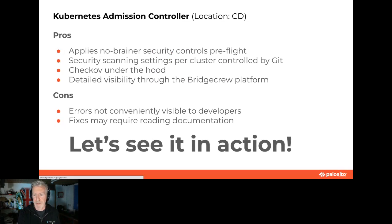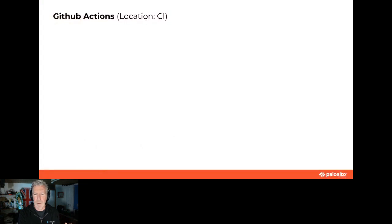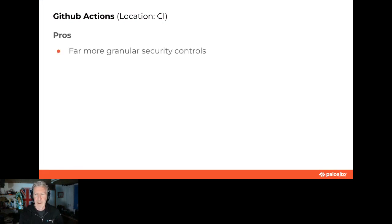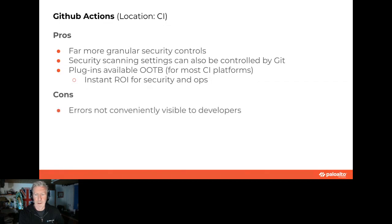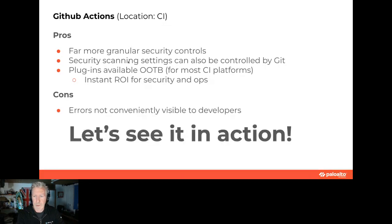Hatch four — this is the CI location, and this is where security is definitely going to be if it's not there already. You get more granular security controls, not just low-hanging fruit. It's all controlled by Git, plugins are available, and there's super easy instant ROI for both security and ops. The cons: once again, errors are not conveniently visible to developers.